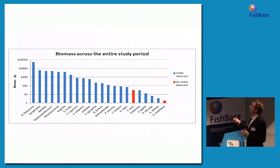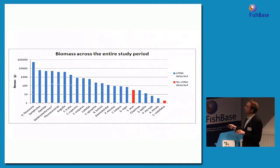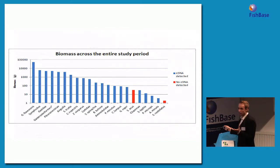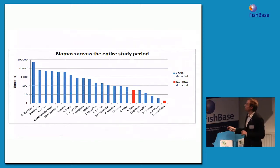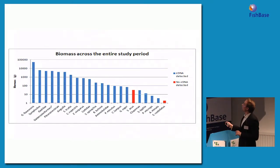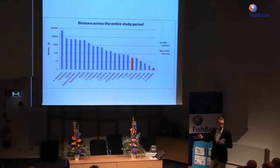When snorkeling is done, they count the individuals, so we can calculate some estimate of biomass using average weight of the fish species. The two species detected only by snorkeling are actually in the lower part of the biomass — indicative that lower biomass species are the ones we don't detect with environmental DNA, at least based on this signal.